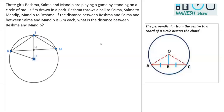This is a textbook question. It says that three girls, Reshma, Salma, and Mandeep, are playing by standing on a circle of radius 5 centimeters. I've drawn a circle and labeled R for Reshma, S for Salma, and M for Mandeep. The radius of the circle — OR or OS — are the same.